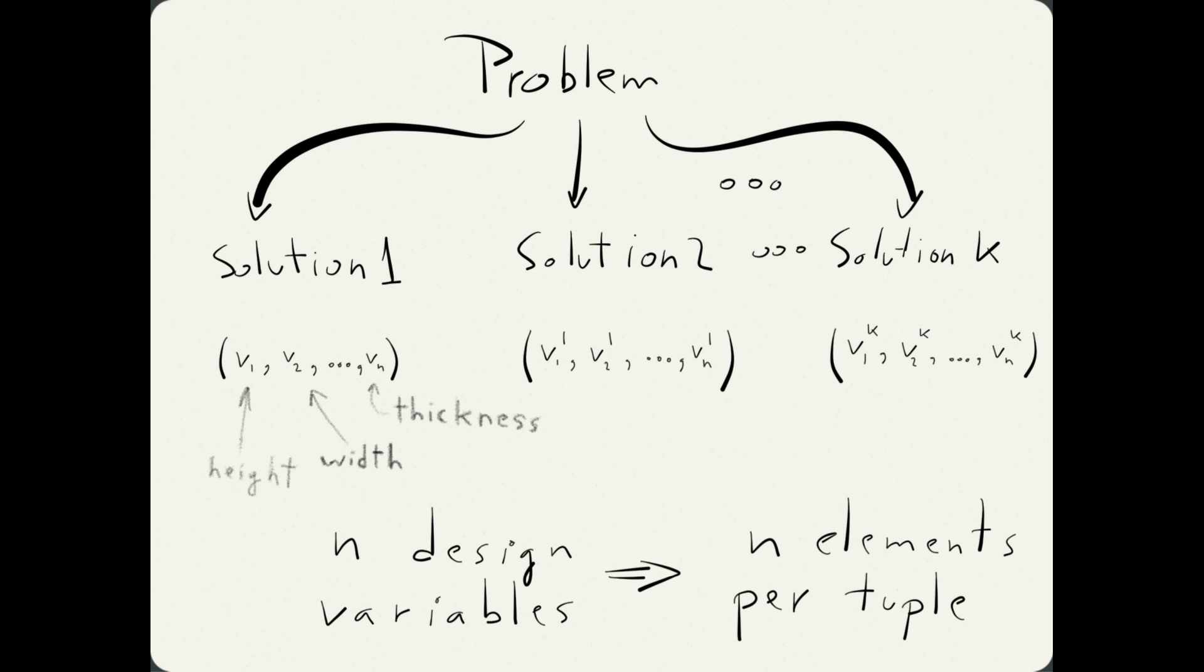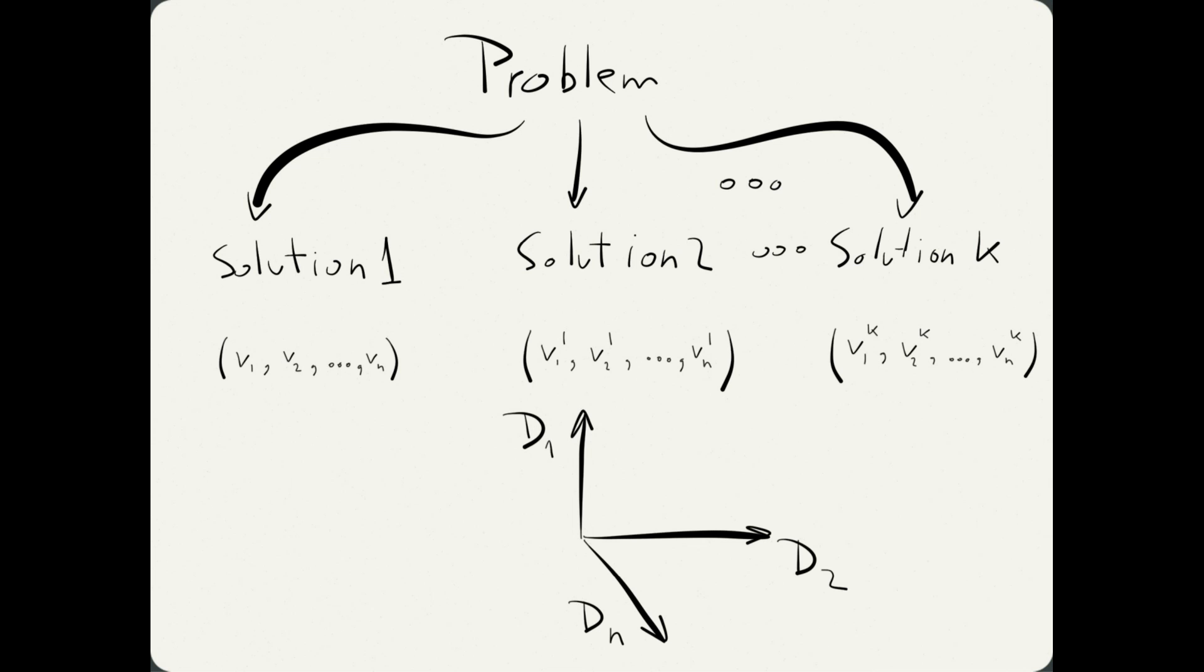In such a case we can define an n-dimensional space, where each dimension corresponds to one of the design variables. Such a space is called a design space, and each potential solution for the given problem can be thought of as a point in this space.